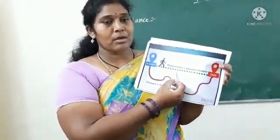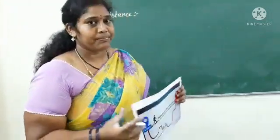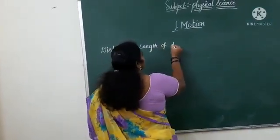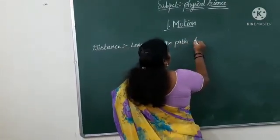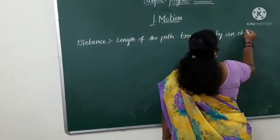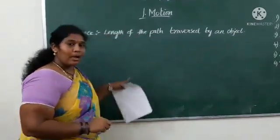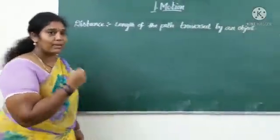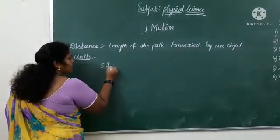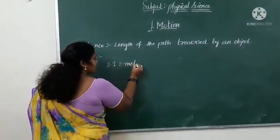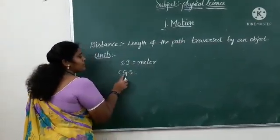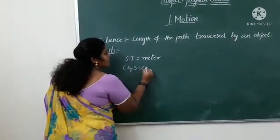Note the definition of distance and displacement. Distance is the length of the path traversed by an object. It has units: in the SI system, the unit is meter, and in the CGS system — centimeter, gram, second — the unit is centimeter.